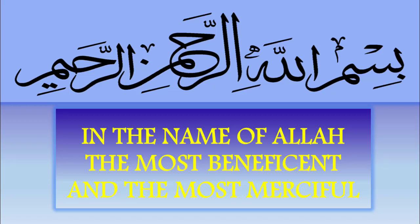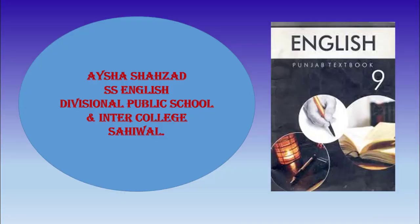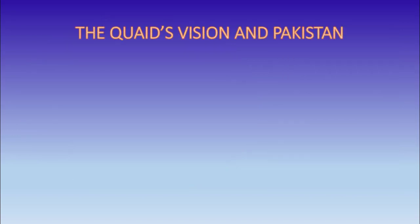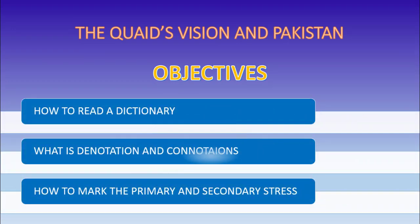In the name of Allah, the most beneficent and the most merciful. I am your English teacher Aisha Shahzad. I welcome you all to the online classes of Divisional Public School and Inter-college Sahiwal. In this lecture, we are going to discuss three different topics from the exercise of lesson number 6, the KITS vision and Pakistan. Our first task is to enhance our knowledge of how to read a dictionary. Secondly, we will discuss what is denotation and what is connotation. Thirdly, our task is to identify the primary and secondary stress in certain words.